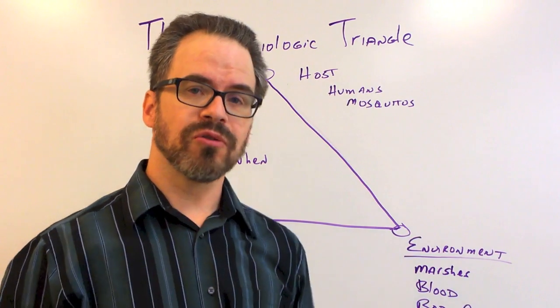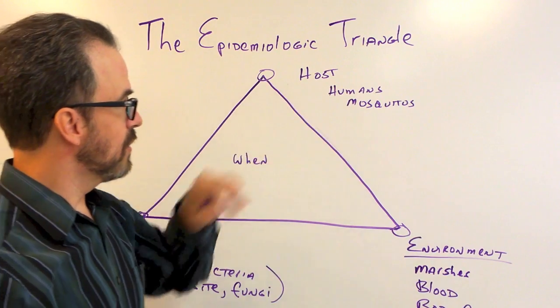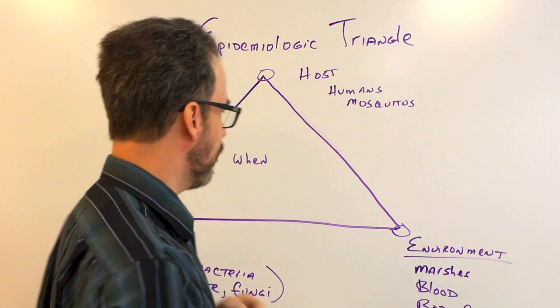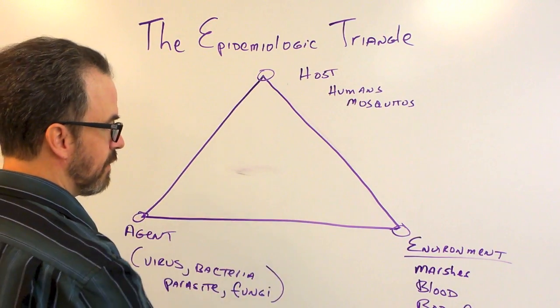So whoever is a host for the particular disease is what goes in this corner for the who part of the triangle. And then the center is when. So the center part refers to time.